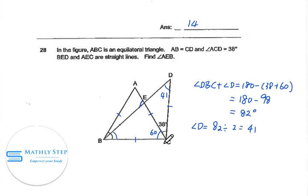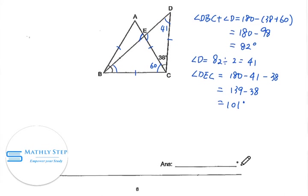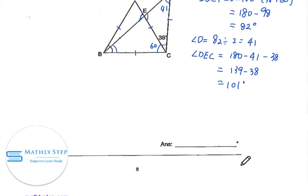Now we look at the small triangle EDC. We can find angle DEC: it equals 180 degrees minus 41 minus 38, equal to 139 minus 38, equal to 101 degrees. So for question 28, the answer is 101.